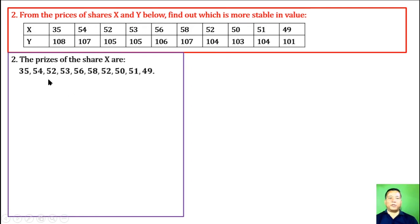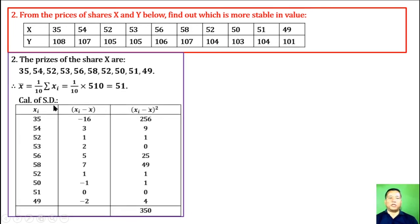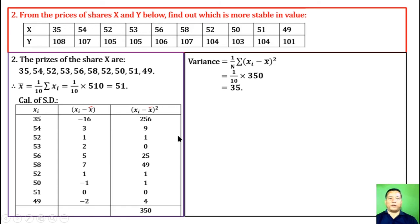The prices of share X are given. The mean formula gives 51. Standard deviation is calculated using direct formula XI minus x bar. The mean is 51. Variance is 1 by n summation of XI minus x bar whole square. We get 35 for variance. Standard deviation is square root of variance, which is square root of 35, whose value is 5.92. Therefore, coefficient of variation of share X is standard deviation by mean into hundred, which is 5.92 by 51 into hundred. We get 11.61.